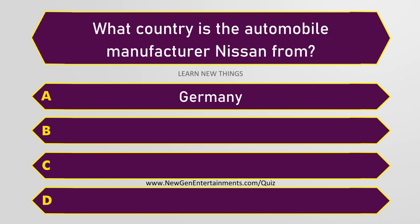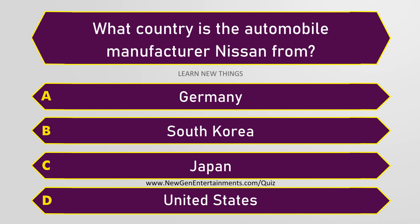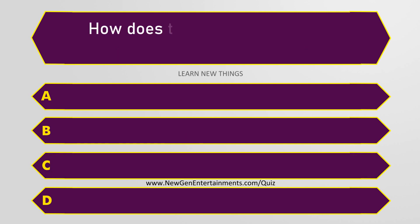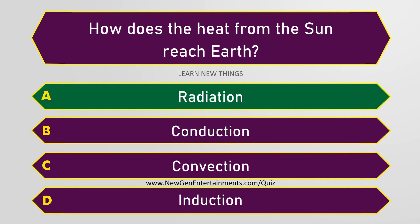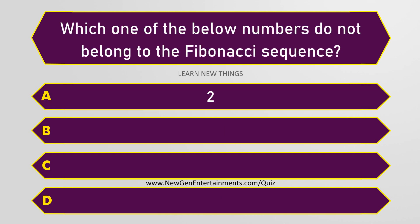What country is the automobile manufacturer Nissan from? Japan. How does the heat from the sun reach Earth? Radiation. Which one of the below numbers does not belong to the Fibonacci sequence? 4.